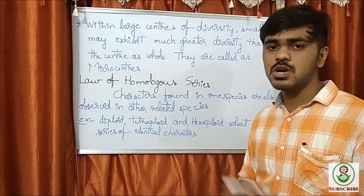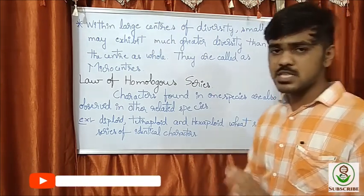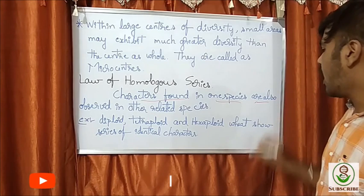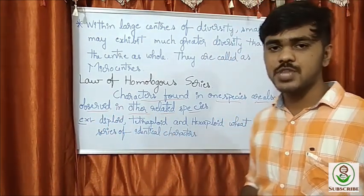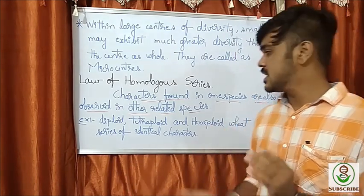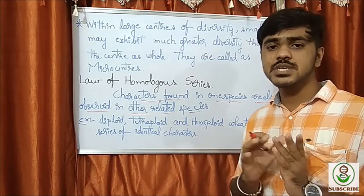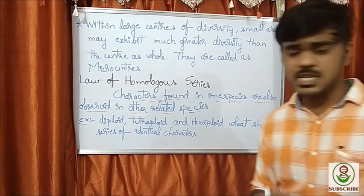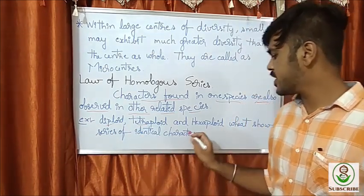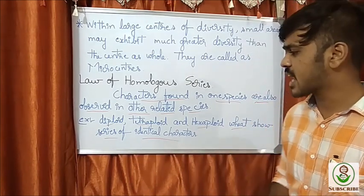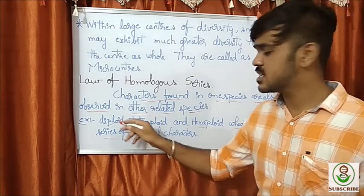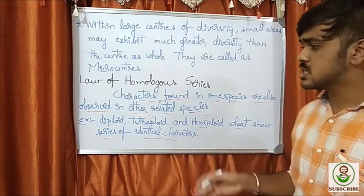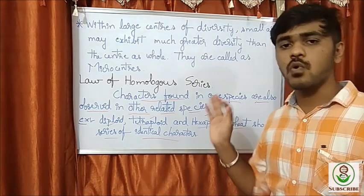Next comes the law of homologous series, followed by Vavilov to describe centers of origin. This law states that characters found in one species are also observed in other related species. The best example is that diploid, tetraploid, and hexaploid wheat show a series of identical characters — they are all the same wheat crop but differ in their 2N chromosome number.